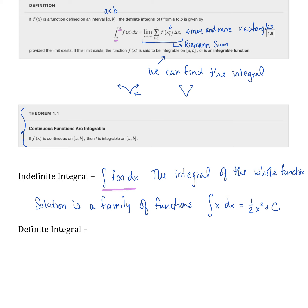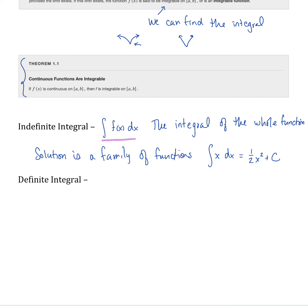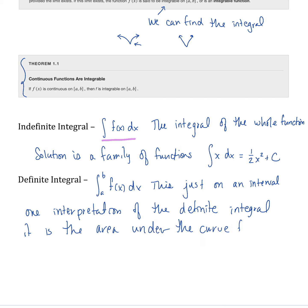With a definite integral, this is our undoing the derivative part, but there's a little bit extra happening here. This is our integral from a to b of f(x) dx. This is just on an interval, not our entire function. One interpretation of the definite integral is that it is the area under the curve from x equals a to x equals b.